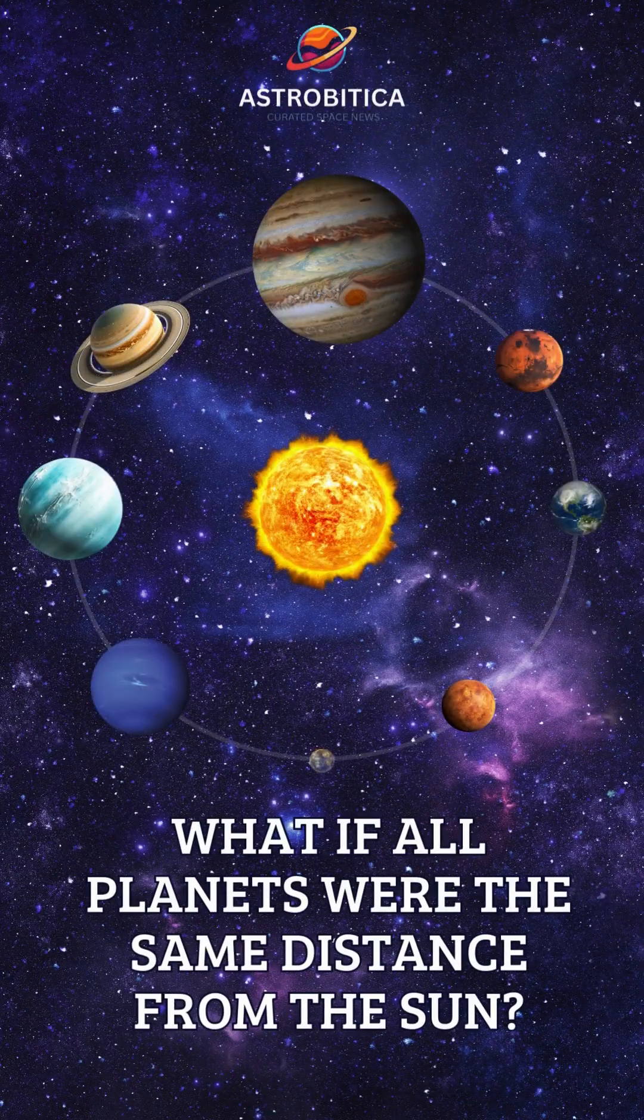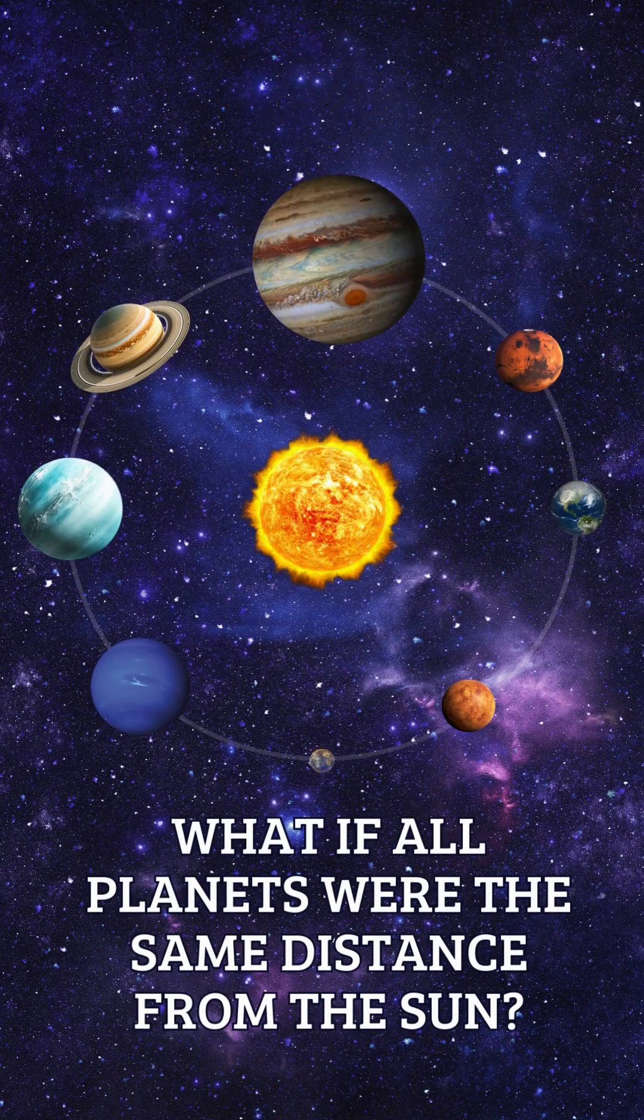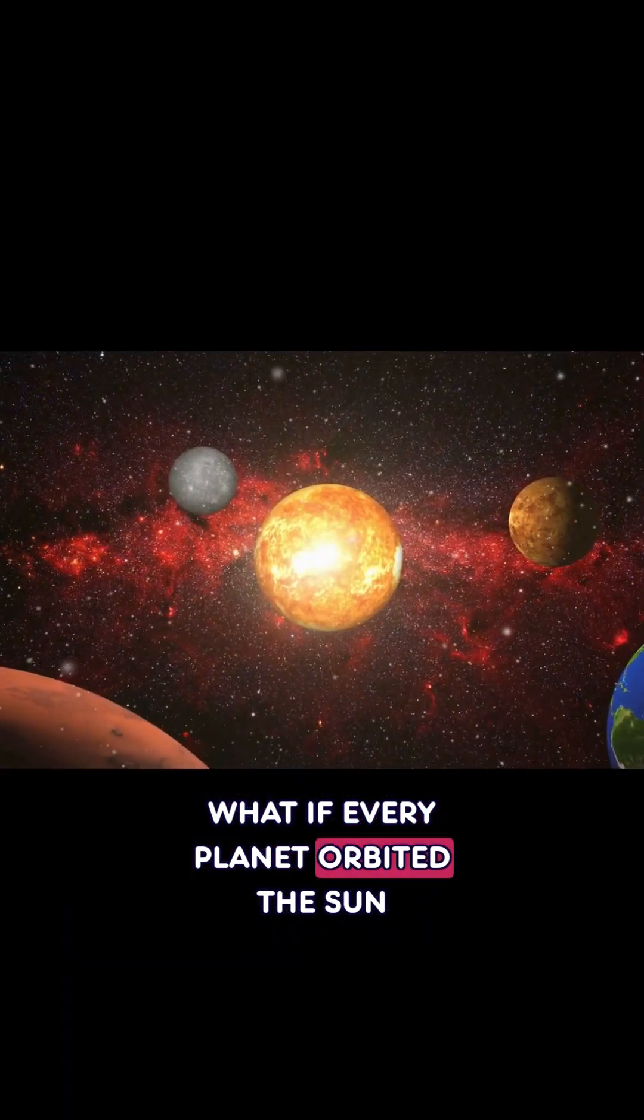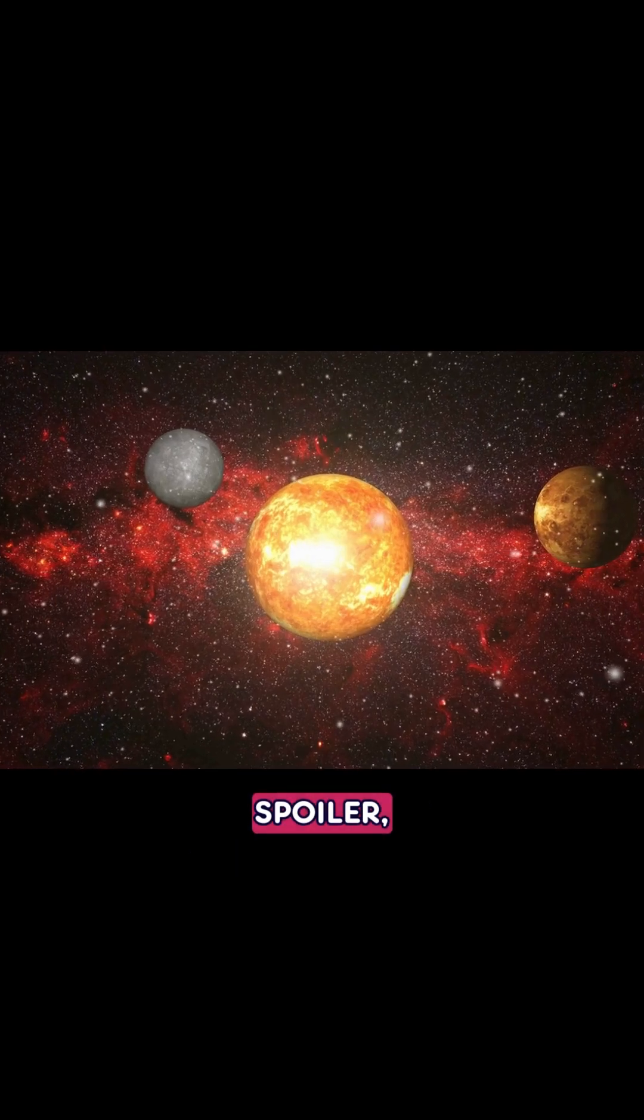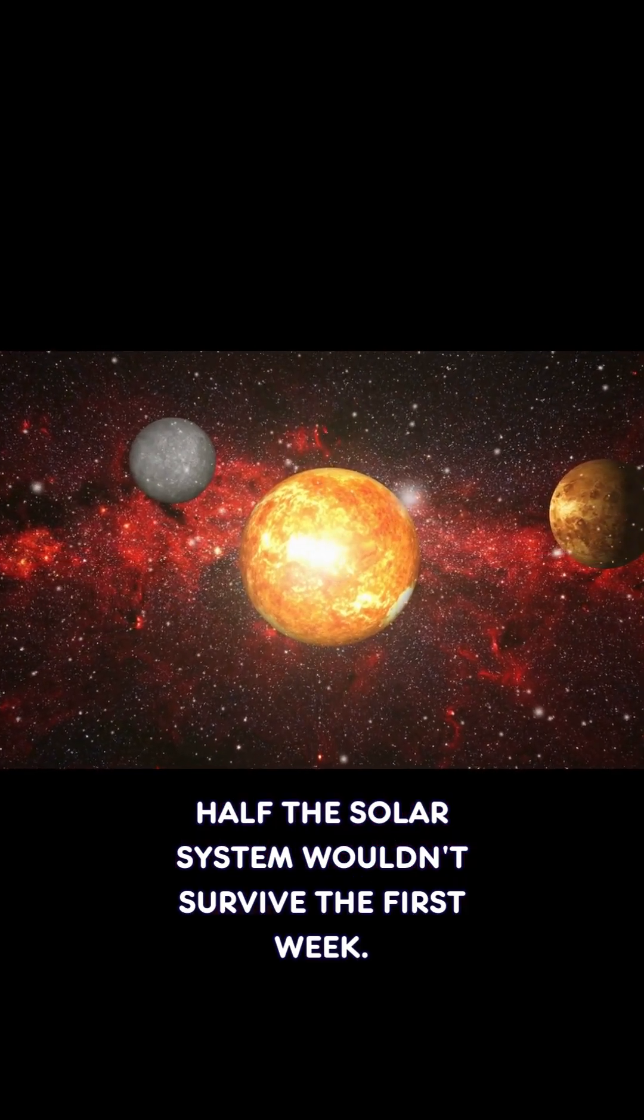What if all planets were the same distance from the sun? What if every planet orbited the sun at the exact same distance? Spoiler, half the solar system wouldn't survive the first week.